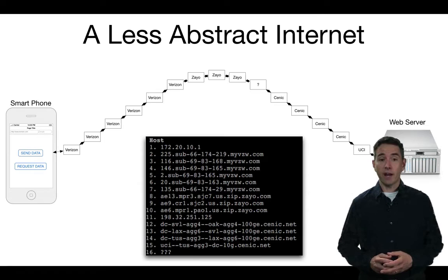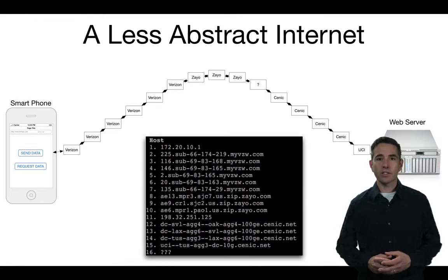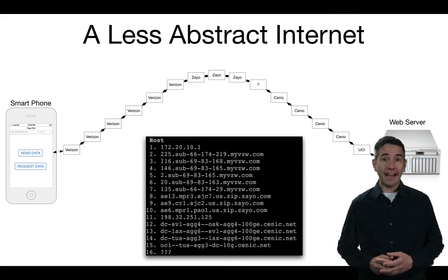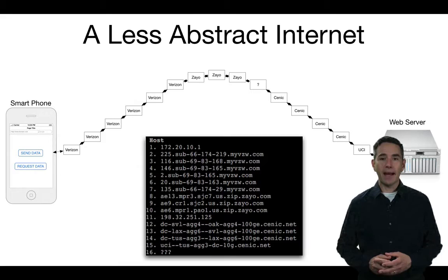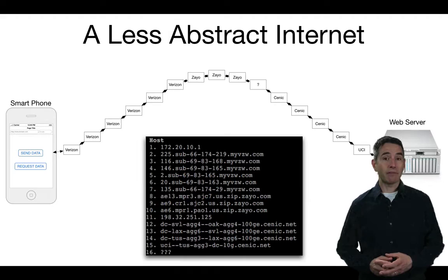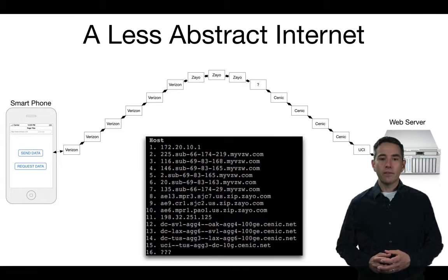In the black box you can see a list of names of each computer working to get my message where it needs to go. Some are just IPv4 addresses — four numbers between 0 and 255 — and some have domain names. For example, the first computer has IP address 172.20.10.1, while the 15th hop has a name like UCI-TUS-etc.CENIC.net. Along the way you can see indications of different organizations: something like myverizonwireless.com for the first seven hops, then a company called Zio, an unknown computer at hop 11, and four computers owned by CENIC before arriving at UCI.